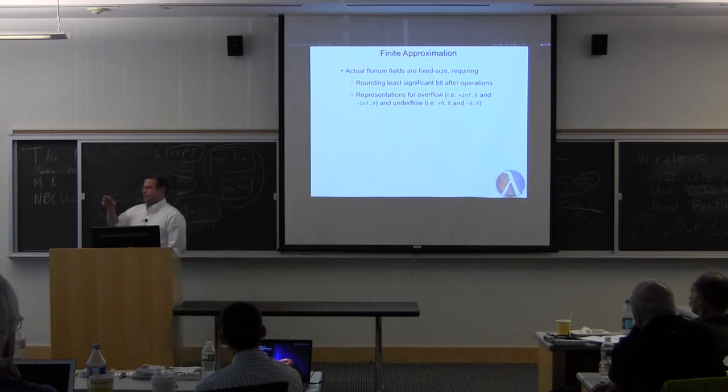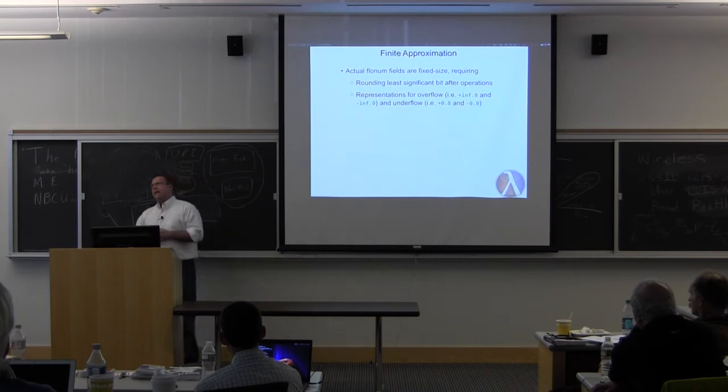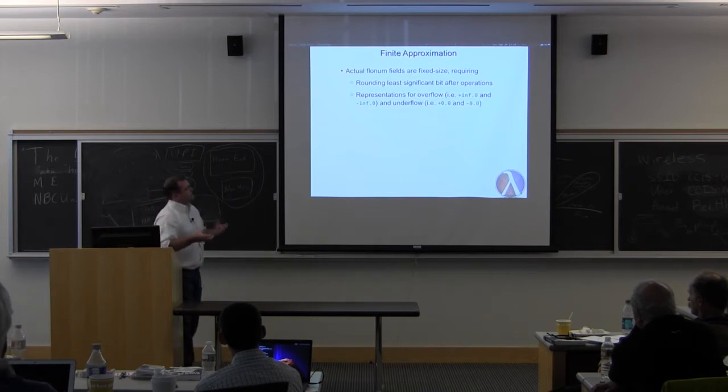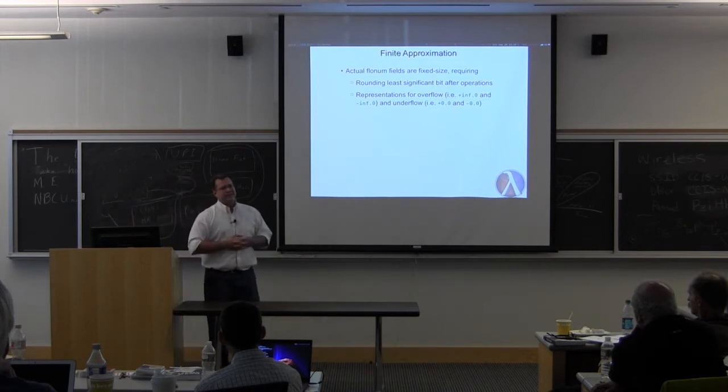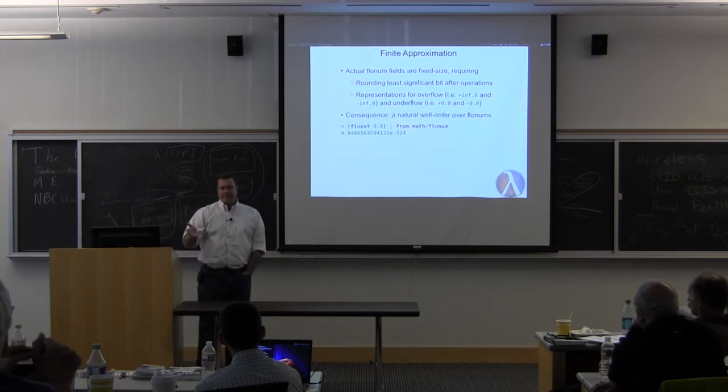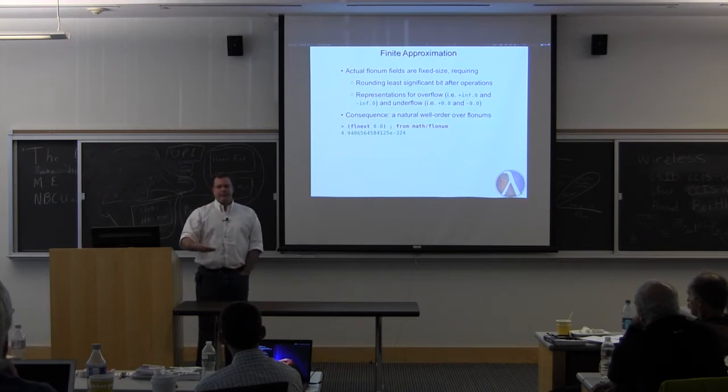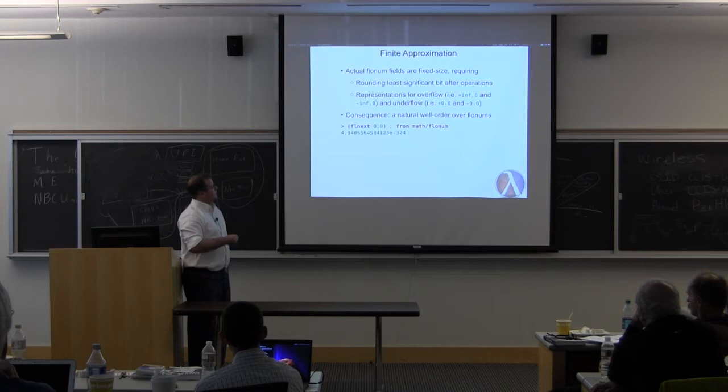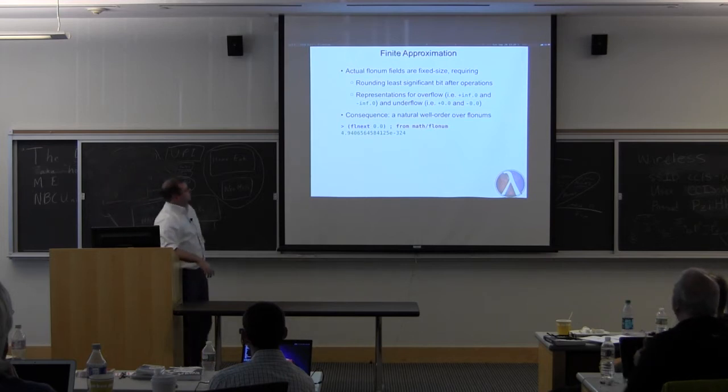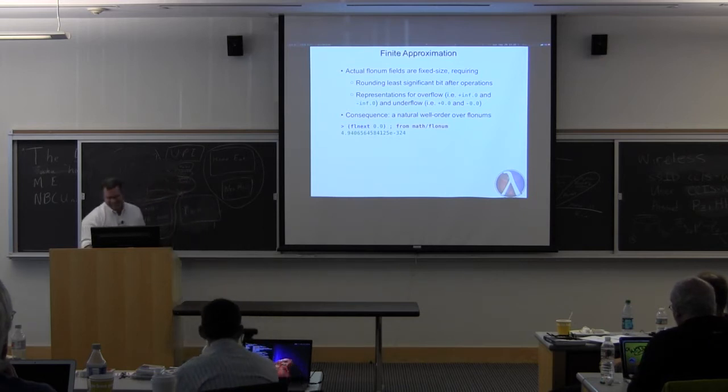Because we're limited, we need to round. Because the significance are limited, we need to round after every operation to the nearest floating point number to the exact one. And because we have a limited exponent field, we have to represent plus and minus infinity or we have to represent cases where we have answers that are too big or too small. That's where positive and negative zero and positive and negative infinity come from. As a consequence, this is actually pretty cool. Because there are finitely many of them, there's a well order. There's always a next floating point number. Flnext is how you get the next one from anything. The next biggest number after zero is 4.9 times 10 to the negative 322, in case it ever comes up on trivial pursuit.